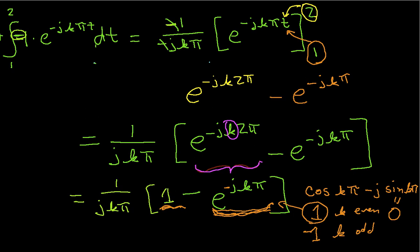When k is odd, I have 1 minus negative 1, which I have here, and that ends up being 2. So this 1 minus e^(-jkπ) is either 0 for k even or 2 for k odd.